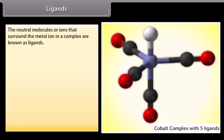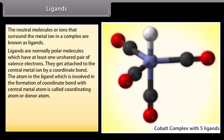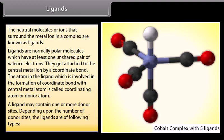Ligands. The neutral molecules or ions that surround the metal ion in a complex are known as ligands. Ligands are normally polar molecules which have at least one unshared pair of valence electrons. They get attached to the central metal ion by a coordinate bond. The atom in the ligand which is involved in the formation of the coordinate bond with the central metal atom is called the coordinating atom or donor atom. A ligand may contain one or more donor sites; depending upon the number of donor sites, the ligands are of the following types.